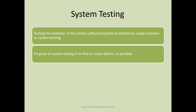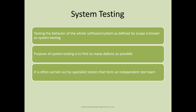The purpose of system testing is to find as many defects as possible. It is often carried out by specialist testers that form an independent test team. System testing is done by independent testers — developers are not involved in system testing at all.